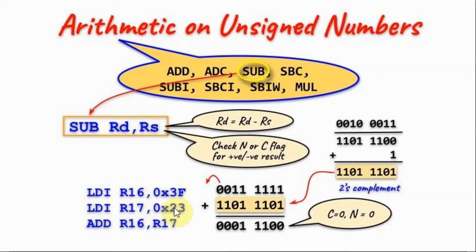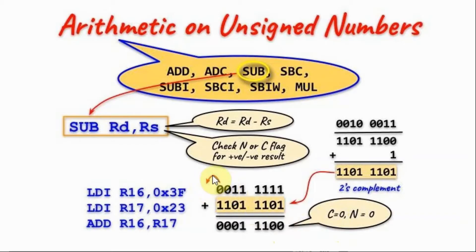In this example, we are subtracting 0x23 from 0x3F. Subtraction is done by adding the first number with the 2's complement of the second number. The 2's complement of 0x23 is obtained by taking the 1's complement and then adding 1. You can see that the C flag is zero — although there was a carry out, after each subtraction the carry flag is inverted, so it is now zero. And the N flag is zero, indicating that the result is a positive number.